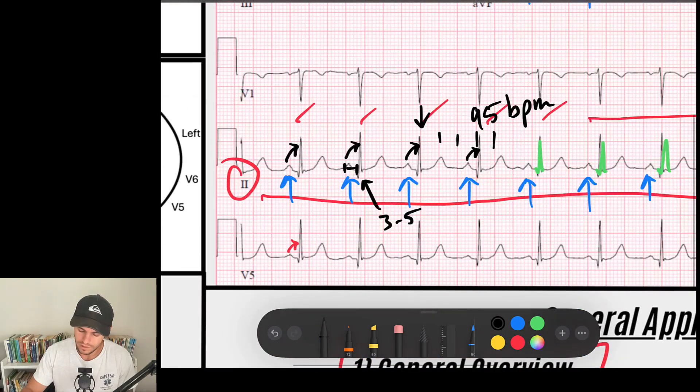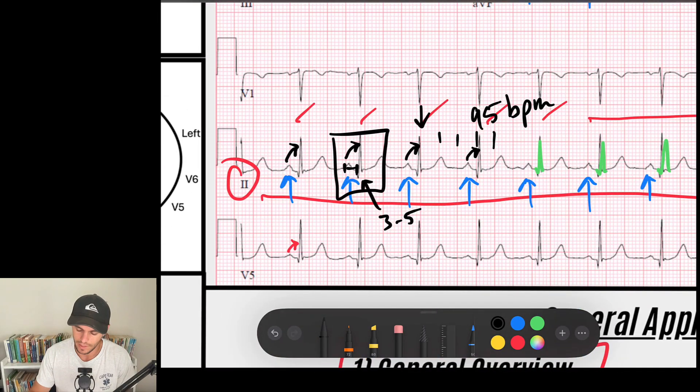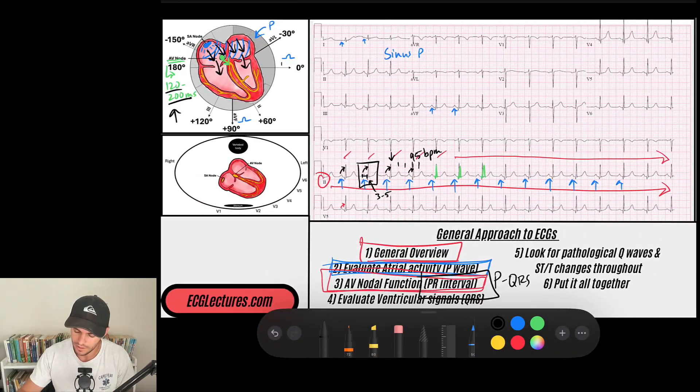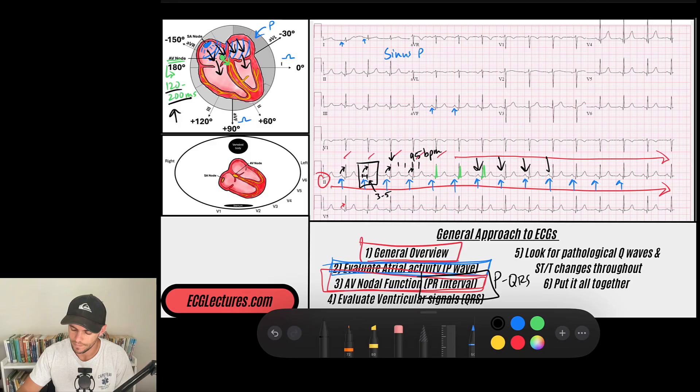Now, we just looked at this PR interval. That's only telling me how does the AV node work in this first beat that we looked at. But we need to obviously look at the PR intervals throughout the entirety of the rhythm to make sure that the AV node's behavior is consistent. And that's what we do here. I'm seeing a normal PR interval throughout the entire rhythm. I'm seeing every P wave going to a QRS. So in this case, that's how we would evaluate our AV nodal function. Now we're going to go down. And what's the next step?